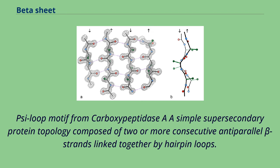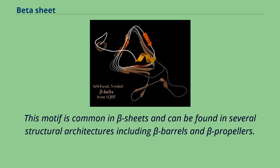Side loop motif from carboxypeptidase A. A simple super-secondary protein topology composed of two or more consecutive anti-parallel beta strands linked together by hairpin loops. This motif is common in beta sheets and can be found in several structural architectures including beta barrels and beta propellers.